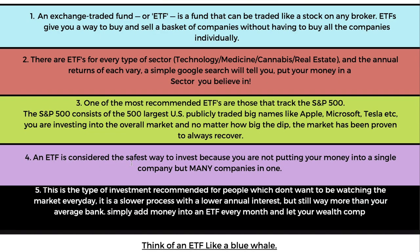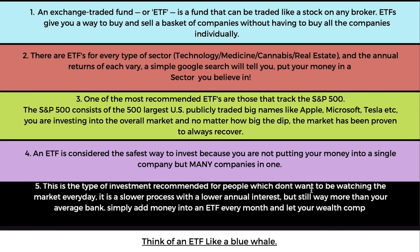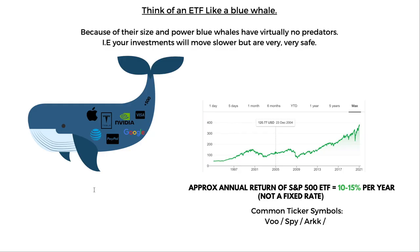The S&P 500 will keep growing — you are betting on the economy of the United States. Even if Apple were to go bankrupt, there are still 499 other companies lifting the ETF up. An ETF is considered the safest way to invest because you are not putting your money into a single company but many companies in one. It's recommended for people who don't want to be watching the market every day. It is a slower process with a lower annual return than buying individual stocks, but still way more than average bank interest. Simply add money into an ETF every month and let your wealth compound.